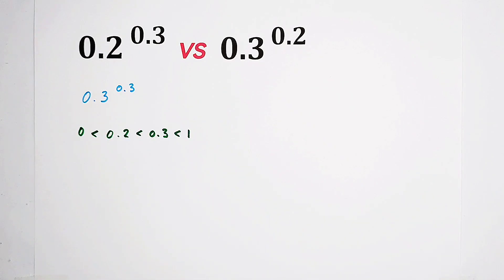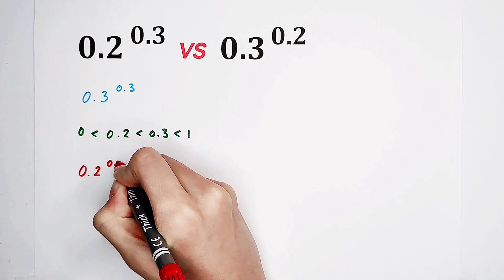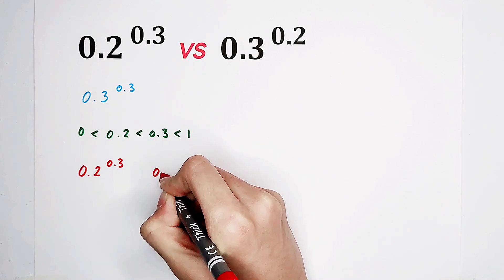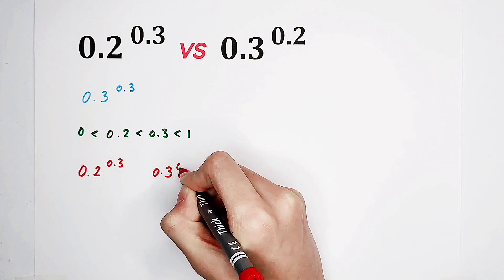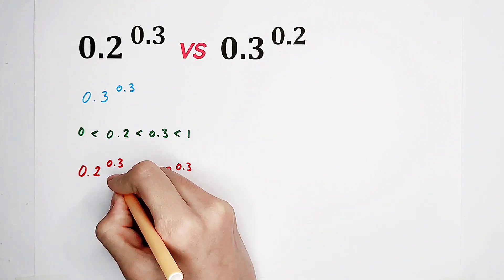So now, 0.2 to the power of 0.3 with 0.3 to the power of 0.3. How should I compare them? Look, same exponent.